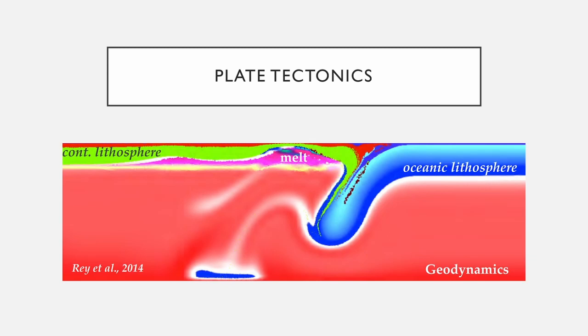The crust is broken into chunks called plates which slowly move over time due to convection currents in the mantle. As these plates move, their boundaries can either converge, colliding into each other; diverge, moving away from each other; or transform, sliding past each other.